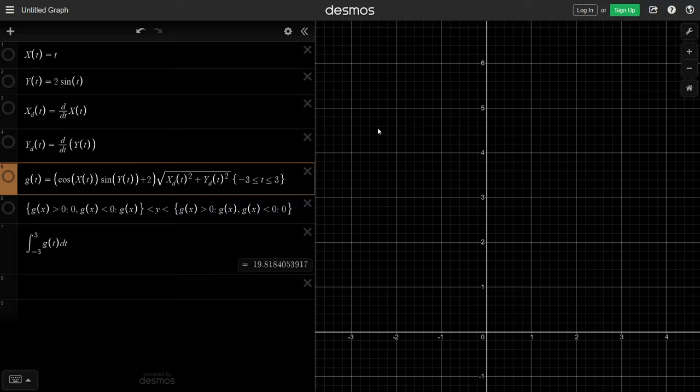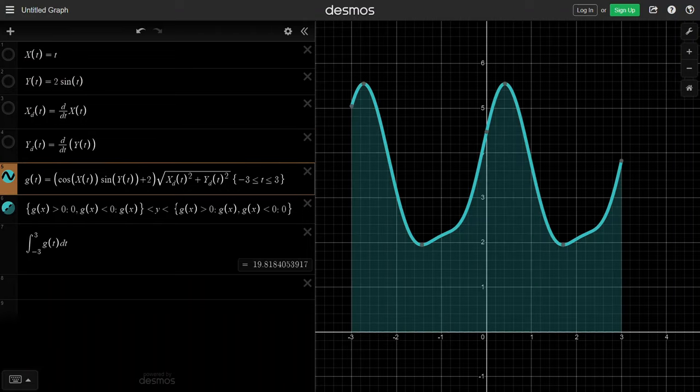Just for verification, if we use Desmos to define our parameterization, their derivatives and the new height function g of t, we get the exact same result.